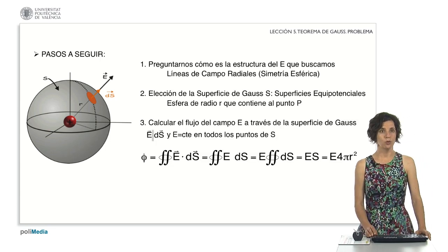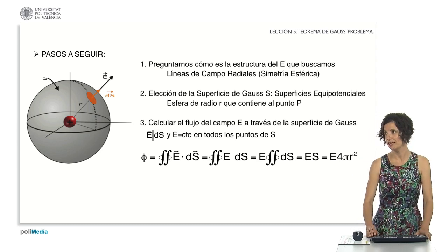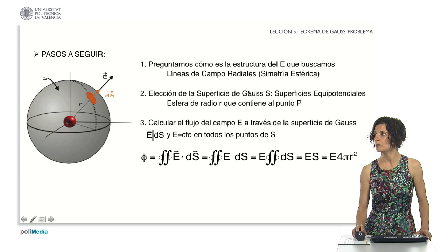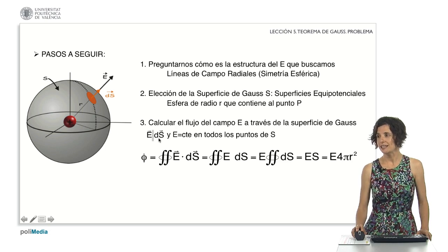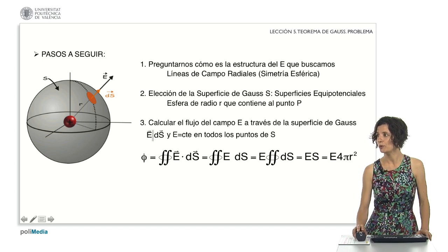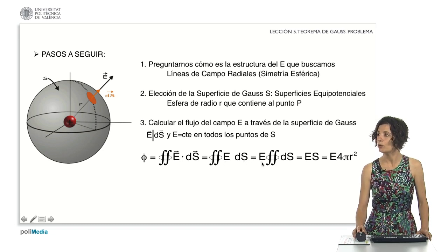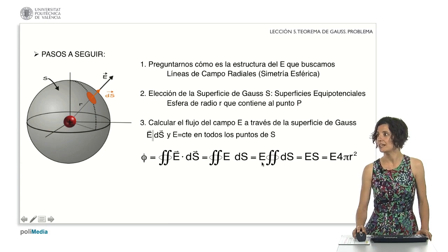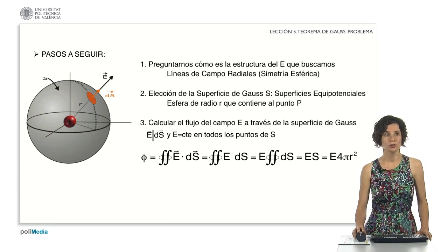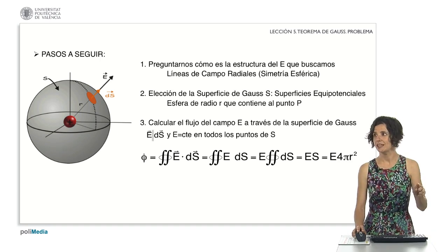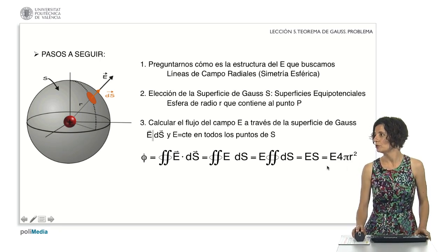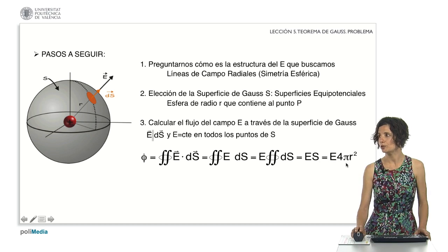Then we calculate the electric field flux through the chosen Gaussian surface. On that sphere of radius r, the electric field vector and the differential area vector are parallel, as you can see in the drawing. Therefore, the scalar product becomes simply the product of the moduli. Also, the modulus of the electric field can be taken outside the integral since it is constant — all points on the sphere are at the same distance from the point charge. Thus, the flux equals the electric field modulus times the surface area of the sphere, that is E times 4 pi r squared.